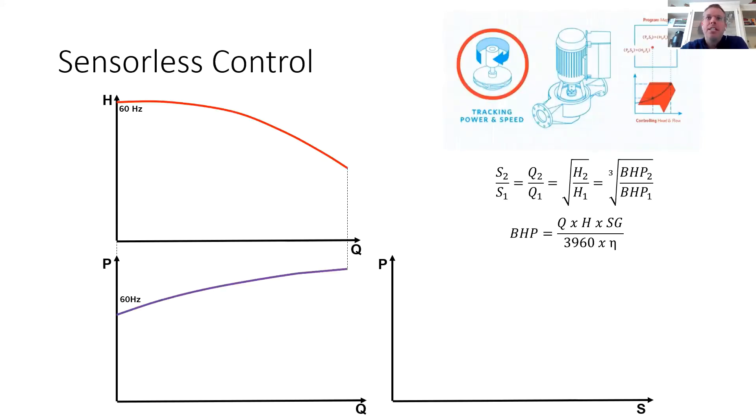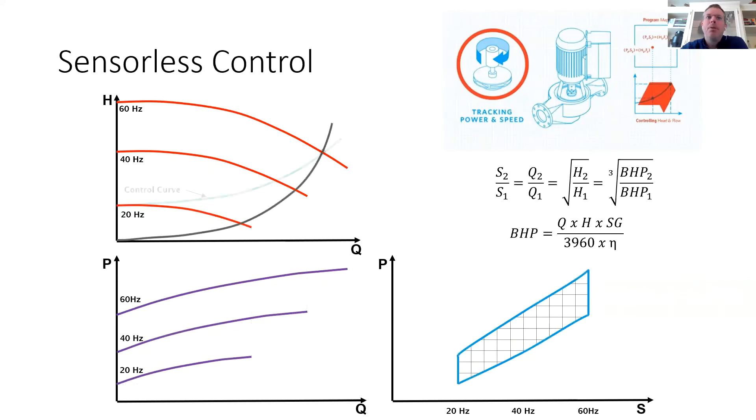So visually, you can see how power and speed are related back to flow and head. Check out this example map. Additionally, we program into the controller a quadratic control curve that takes into account the minimum head required to satisfy your most remote load and draws a quadratic control curve up to design flow and head.